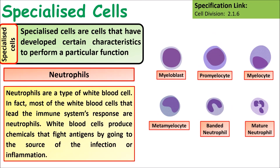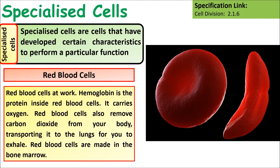Neutrophils are a type of white blood cell — most white blood cells that lead to the immune system's response are neutrophils. White blood cells produce chemicals that fight antigens by going to the source of infection or causing inflammation. Red blood cells are biconcave cells that don't have a nucleus or many organelles, allowing them to carry the maximum amount of haemoglobin, carrying oxygen from the lungs and carbon dioxide back to the lungs.